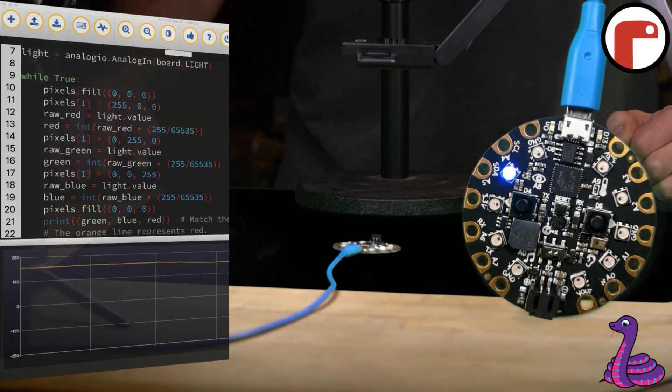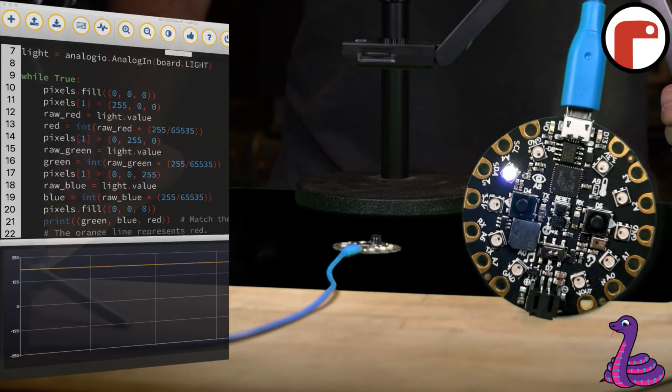This CircuitPython code flashes the NeoPixel red and immediately records the value of the light sensor reading, then flashes green and records another light value, and again for blue. Finally, it prints these three values, which allows us to see them appear on the plotter in Moo.